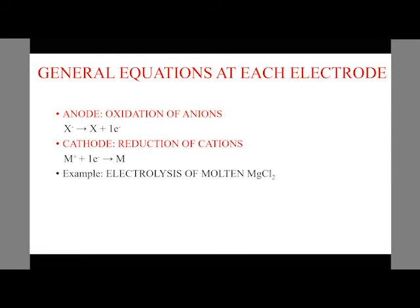An example: we have electrolysis of molten magnesium chloride. What will be the product at each electrode? At the anode, we have two chloride ions losing two electrons to produce one mole of chlorine molecules. And at the cathode is the reduction. We have magnesium gaining two electrons to produce one mole of magnesium.